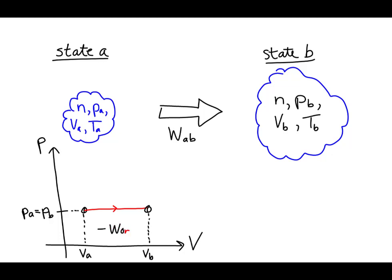The negative of the work done on the gas by the environment is equal to the signed area between the isobaric line and the volume axis. It can be shown that the work done on a gas by its environment may be found by integrating pressure with respect to volume between the two states. This definite integral is represented geometrically as negative of the signed area between the isobaric line and the volume axis.